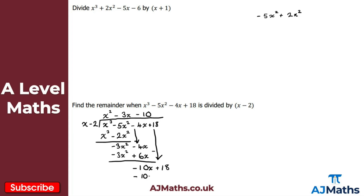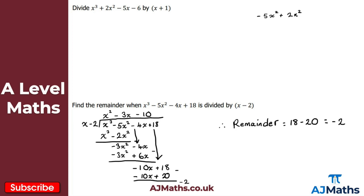These questions are quite mechanical — they always work the same way, so as long as you follow the basic steps it's a straightforward topic. Subtracting: minus 10x minus minus 10x cancels to give 0x, and 18 minus 20 gives minus 2. So the remainder is minus 2.